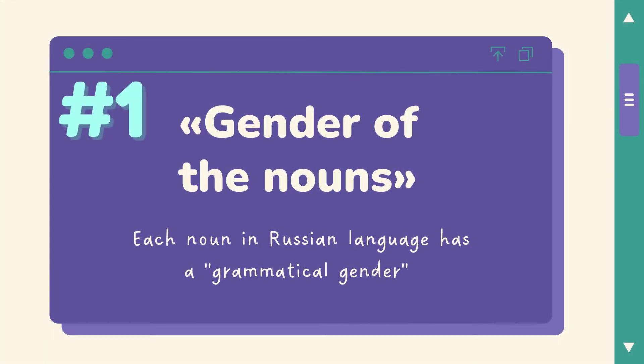The first thing I want to talk to you about, and one of the most essential things you need to know as a beginner learner of Russian, is the gender of nouns. Every noun in Russian has a gender — it is a grammatical gender. The options are: it can be either masculine, feminine, or neuter.